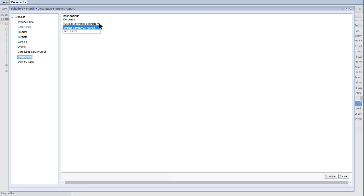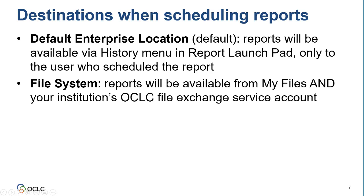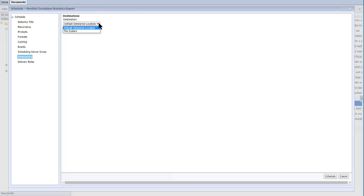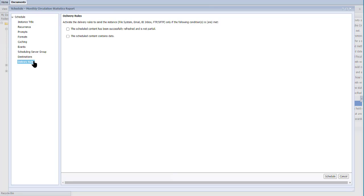There are two destination options: default enterprise location and file system. If you select default enterprise location, the reports will be available from the History menu in Report Launchpad, but only to the user who scheduled the report — this location is ideal for personally identifiable information or other sensitive data. If you select File System, the reports will be available from My Files in WorldShare as well as your institution's OCLC file exchange service account. I'll show you how to retrieve reports from all of these locations. I'm going to save this report to File System. You should leave both checkboxes selected. Optionally, you can activate delivery rules to deliver the report only when certain conditions are met, such as the report has been refreshed and the report contains data.